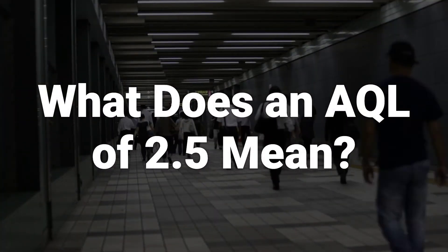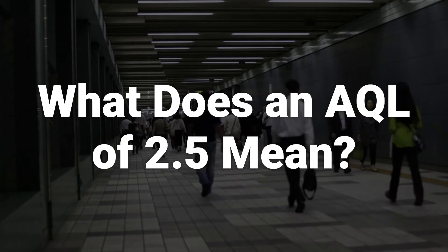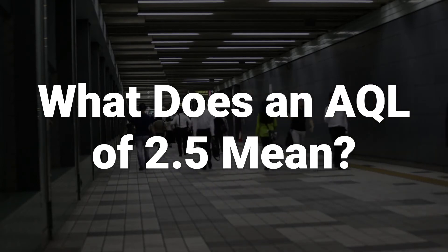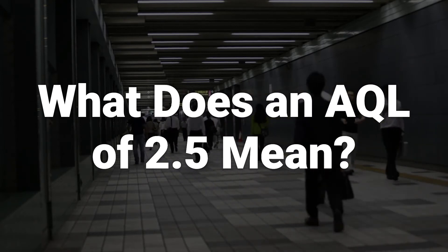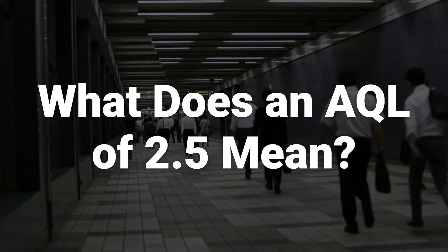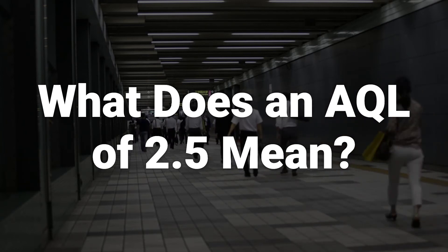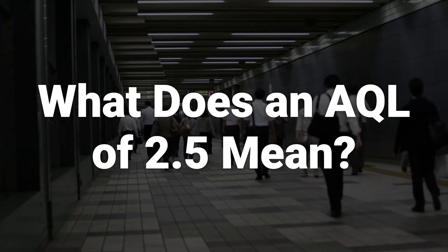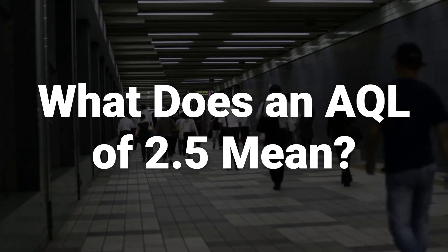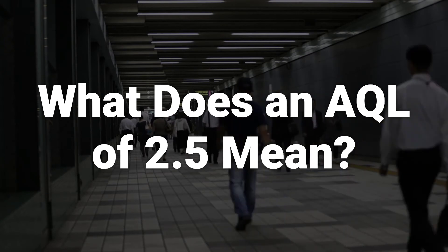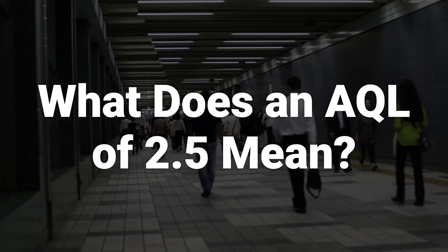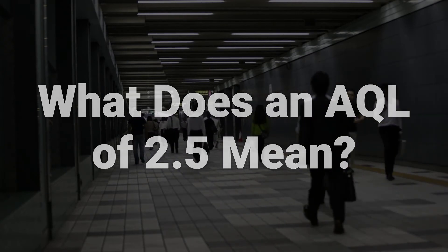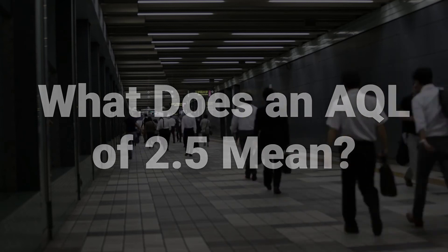An AQL of 2.5 means that only 2.5% of an order can be defective to be considered acceptable. If more than 2.5% of the order is defective, it doesn't meet the agreement between the buyer and producer. AQL depends on the product and industry, with no standard AQL.